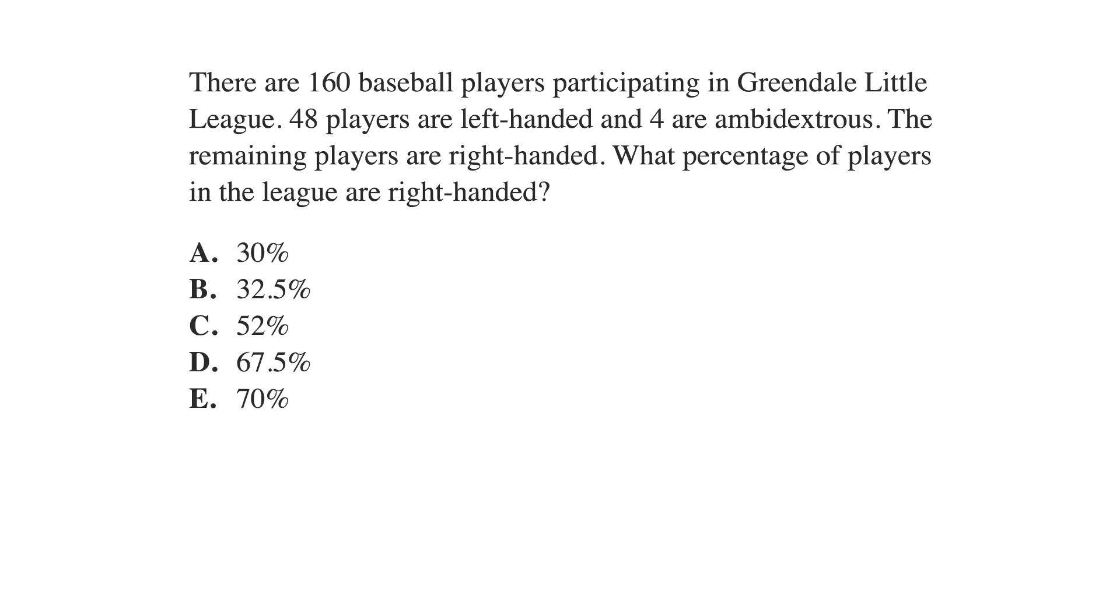First thing we need to do is underline the facts: 160 baseball players, 48 players are left-handed, 4 are ambidextrous, and the remaining players are right-handed. Now, we'll circle the keywords.